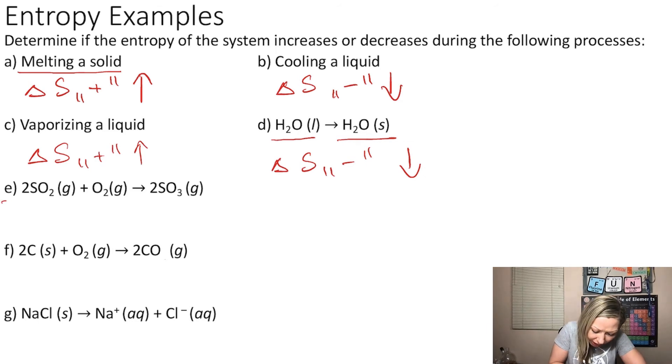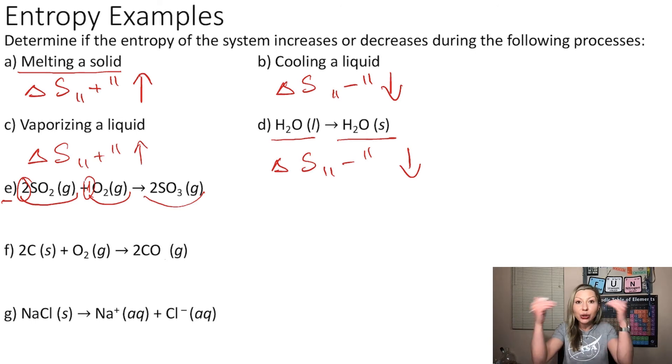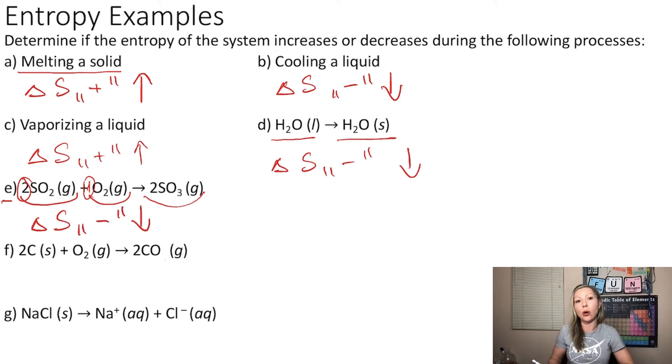So in option E, I'm going to start with two moles of SO2 gas and one mole of O2 gas. And I'm going to create two moles of SO3 gas. Well, because I started with two different types of molecules and a total of 2 plus 1 moles and I created only 2 moles of gas, well, my randomness actually decreased, right? So in this case, my change in entropy will be again negative and it's going to go down.